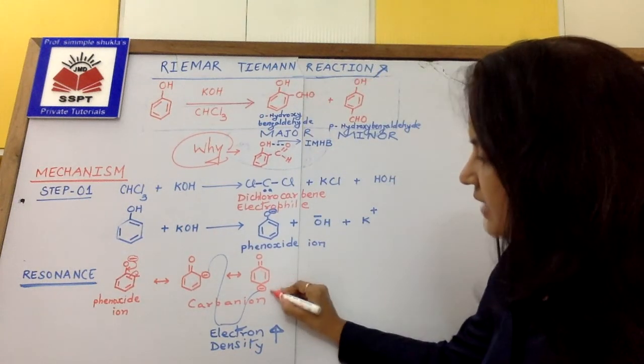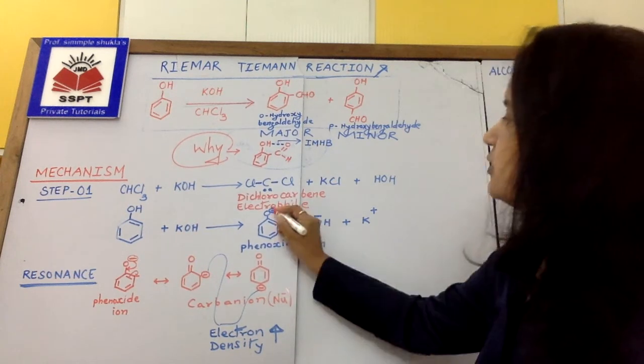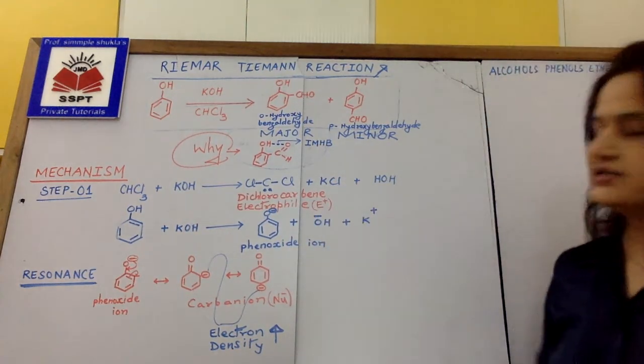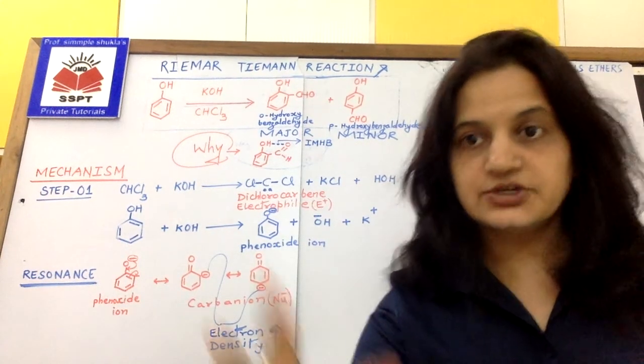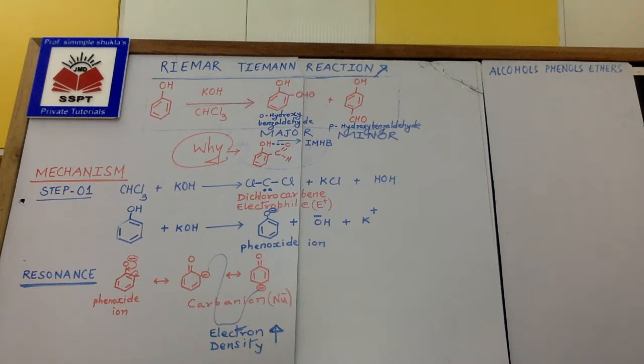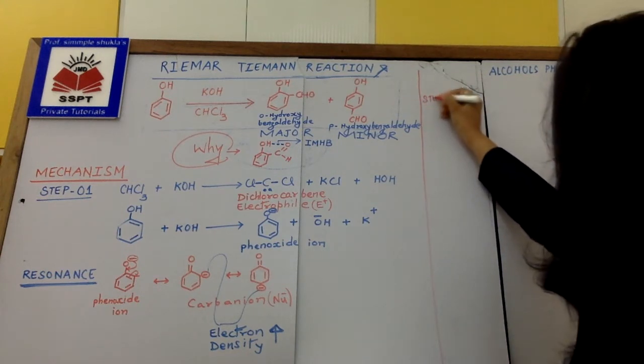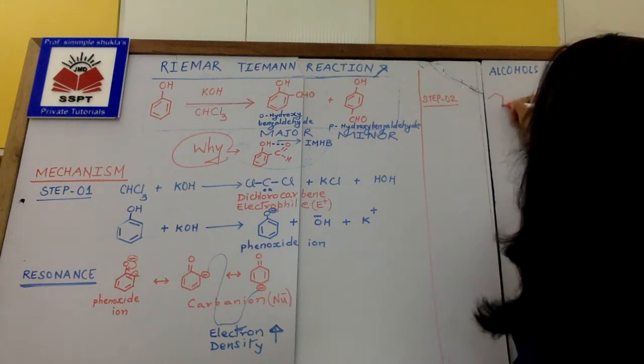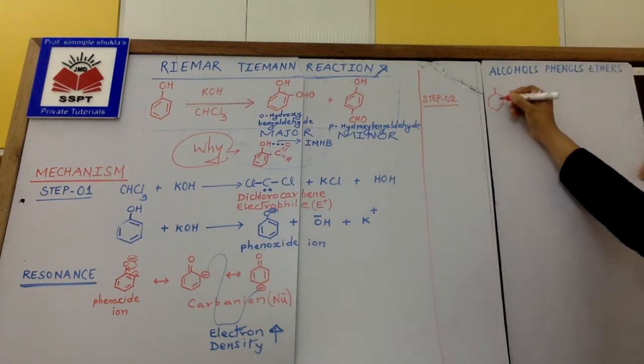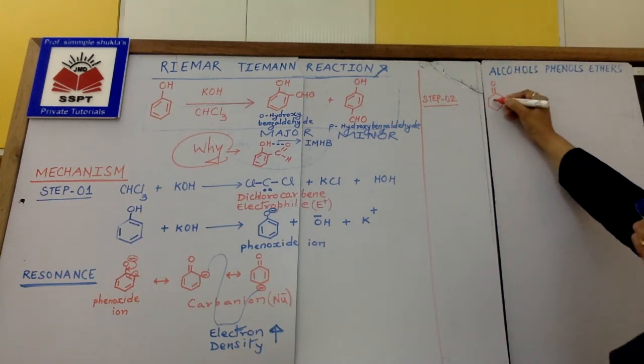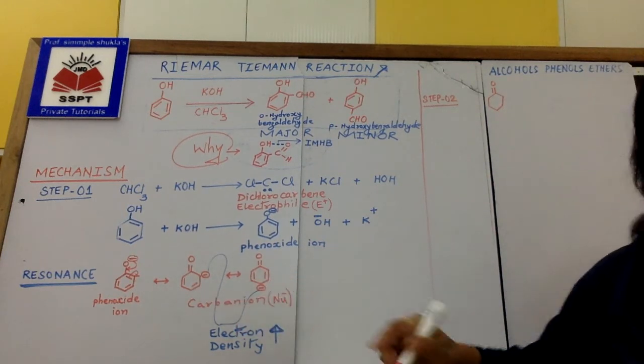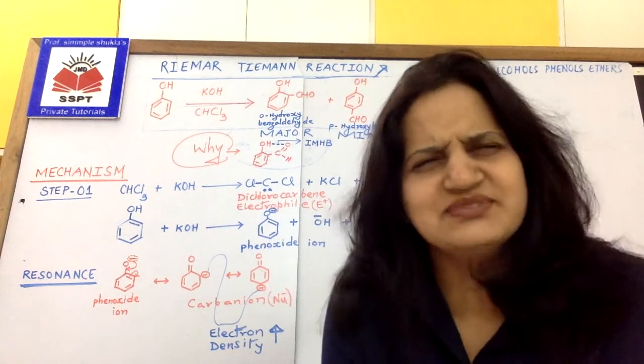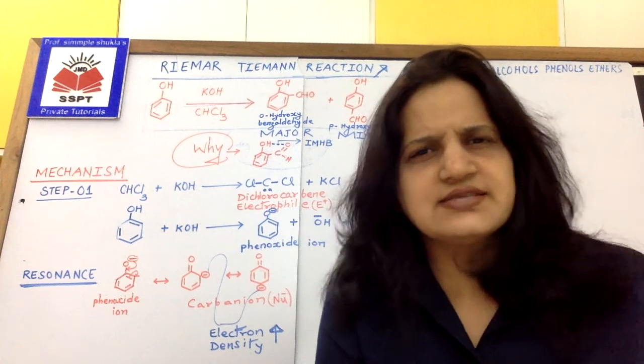Now this is anion, carbanion, nucleophilic, and this dichlorocarbene is electrophilic. Now how does this reaction happen? In the next step, which is our step number 2. So this is how we are taking the carbanion. You can take ortho also, you can take para also. Since in the beginning we learned ortho is a major product, so I am just taking ortho. We will write in the same manner with para also.